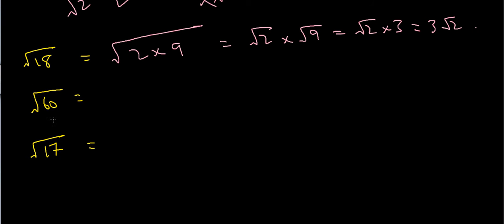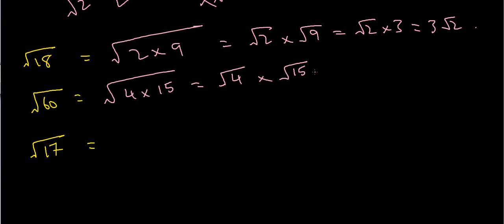The next example asks us to simplify the square root of 60. I know that the square root of 60 is the square root of 4 times 15, because 4 times 15 is 60. This is the same as the square root of 4 times the square root of 15. The square root of 4 is just 2, so this is 2 root 15. Now 15 is 3 times 5, so I could write this as 2 times root 3 times root 5, but I can't simplify root 3 or root 5 further, so I'll leave it as 2 root 15.